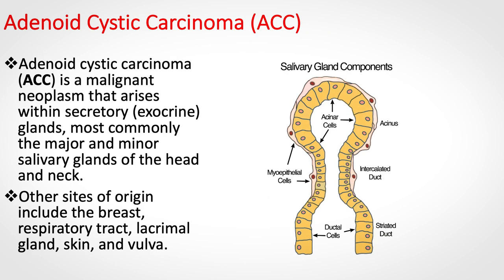Adenoid cystic carcinoma, or ACC for short, is a malignant cancer that originates from exocrine glands — glands that secrete their product outside the body or into body cavities. The main gland affected by ACC is the salivary glands, but also other exocrine glands such as the breast. On the right is a cartoon depicting the different cell types found in the salivary gland.